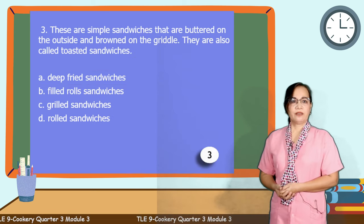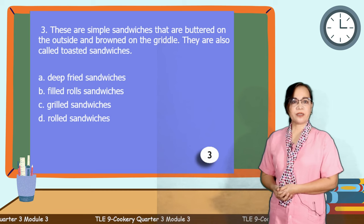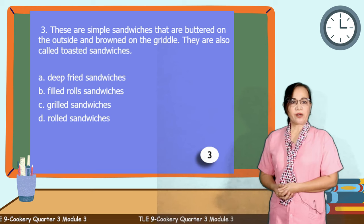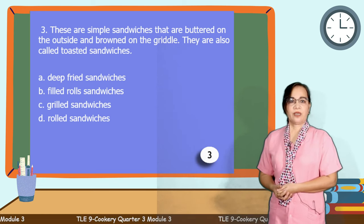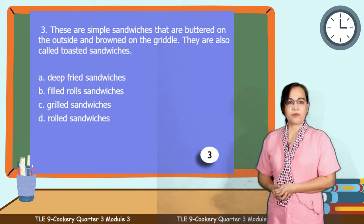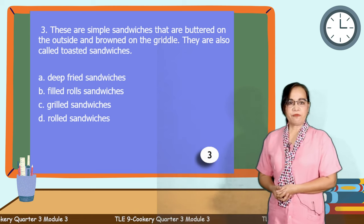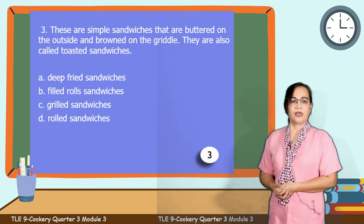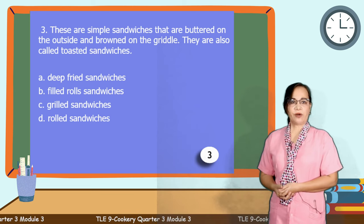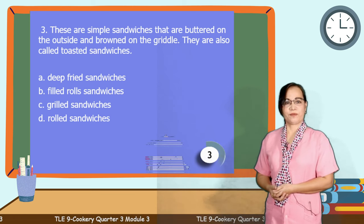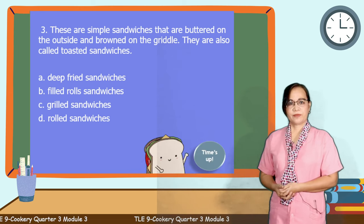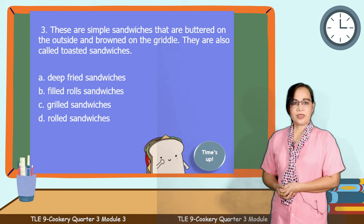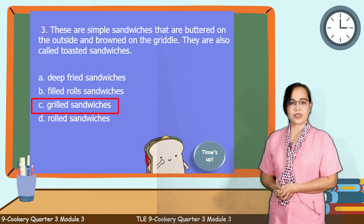Question number 3: These are simple sandwiches that are battered on the outside and browned on the griddle. They are also called toasted sandwiches. Is it letter A, deep-fried sandwich? Letter B, filled roll sandwiches? C, grilled sandwiches? Or letter D, rolled sandwiches? Time's up. It's letter C, grilled sandwiches. Very good.